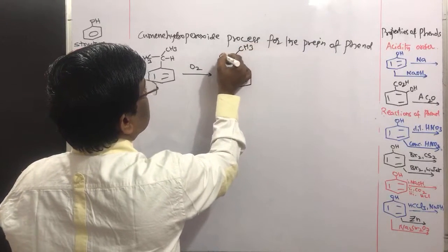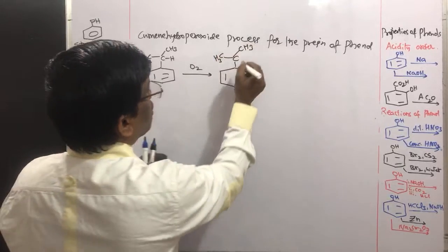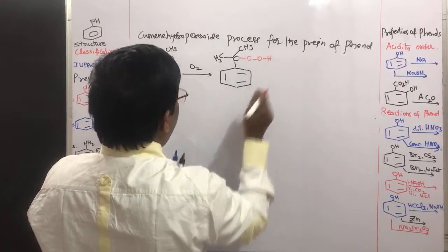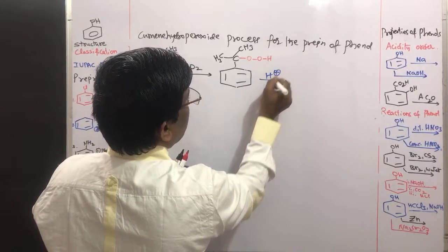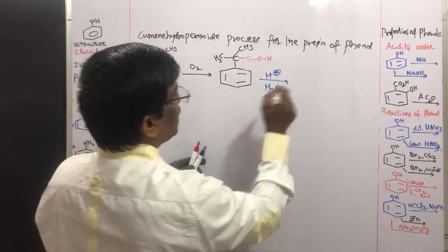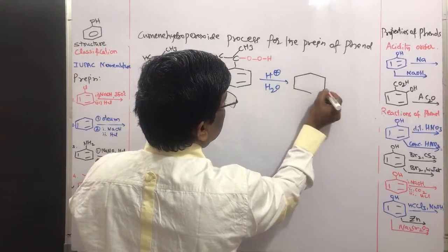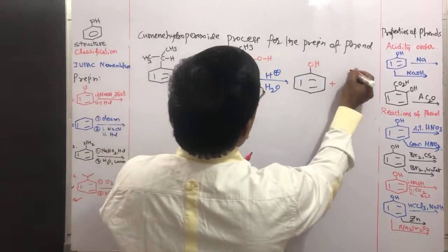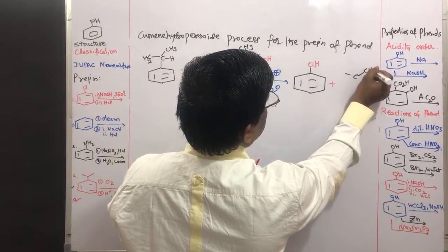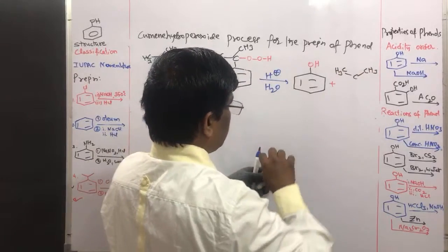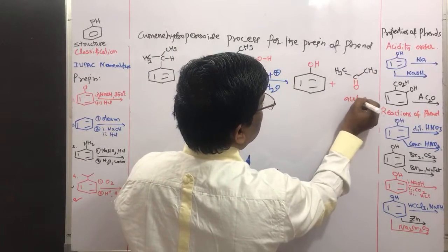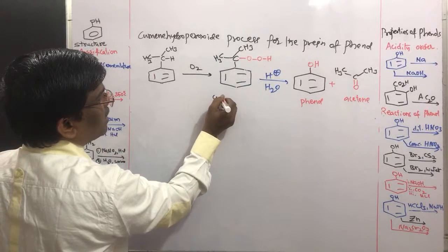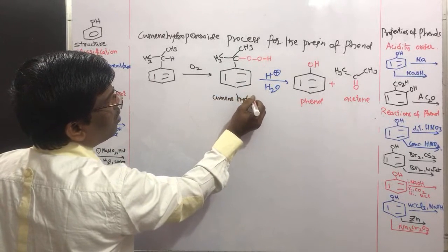This oxidation gives cumene hydroperoxide. This intermediate structure is very, very important — it has been asked in so many examinations. The cumene hydroperoxide, upon treatment with dilute acid and water, gives phenol plus acetone. The intermediate structure is cumene hydroperoxide.